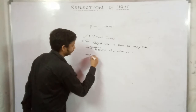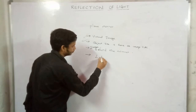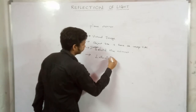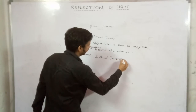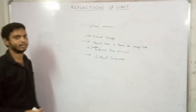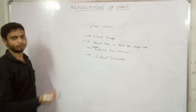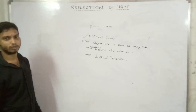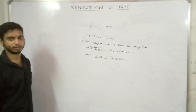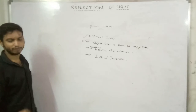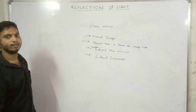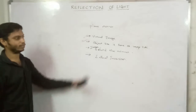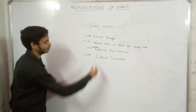The next property is lateral inversion. Lateral inversion means our left hand appears as the right hand in the mirror, and the right hand appears as the left hand. So left and right sides are swapped. That is why it is called lateral inversion. In a plane mirror, lateral inversion always occurs.